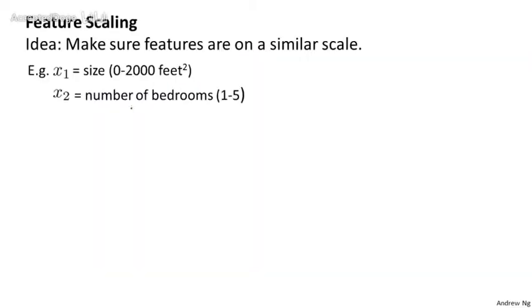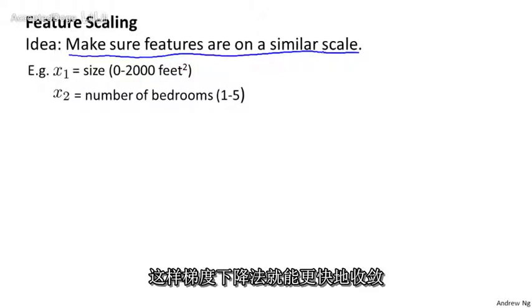Here's the idea. If you have a problem where you have multiple features, if you make sure that the features are on a similar scale, by which I mean make sure that the different features take on similar ranges of values, then gradient descent can converge more quickly.